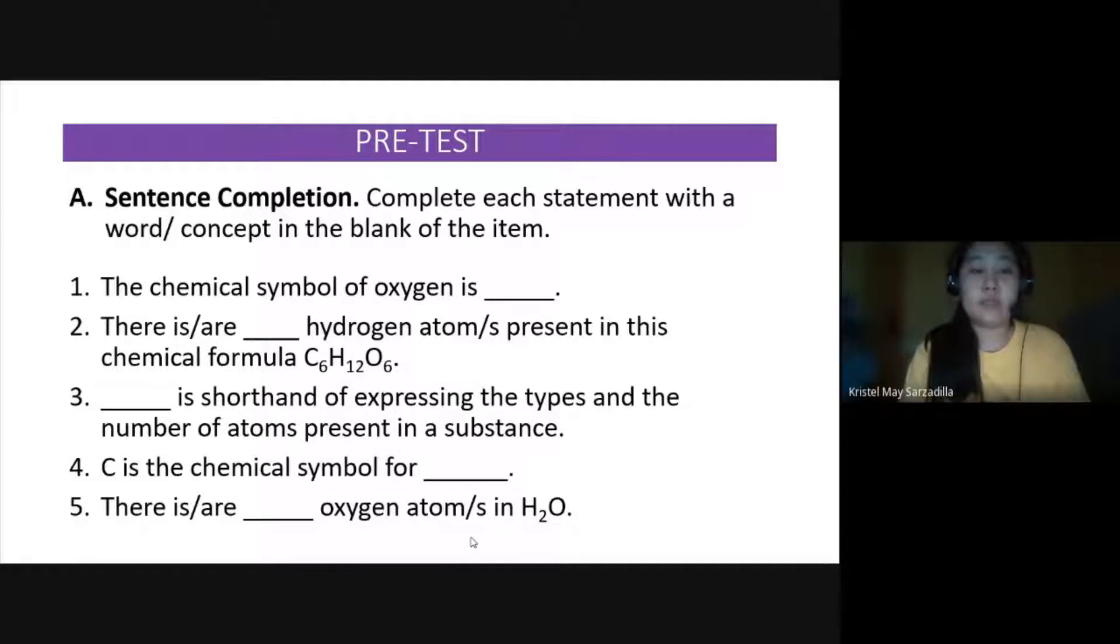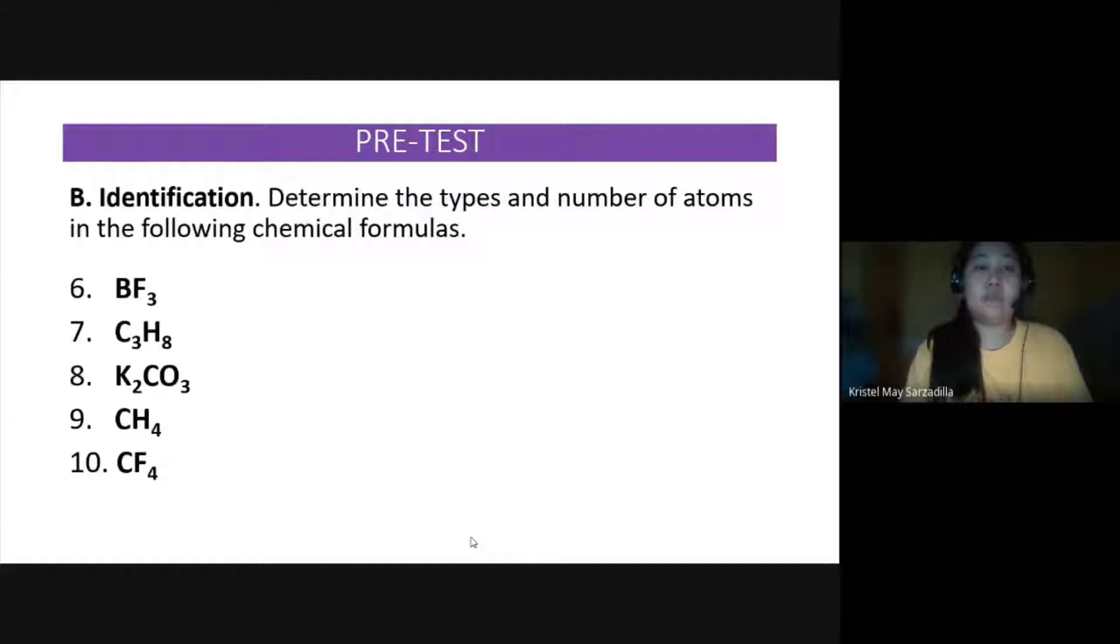And number 5, there is, are, blank oxygen atoms in H2O. If you are ready, you can now proceed with letter B. Identification. Determine the types and number of atoms in the following chemical formulas.